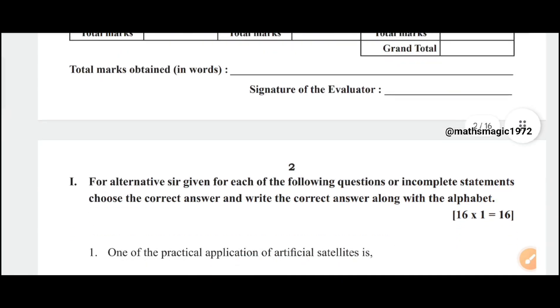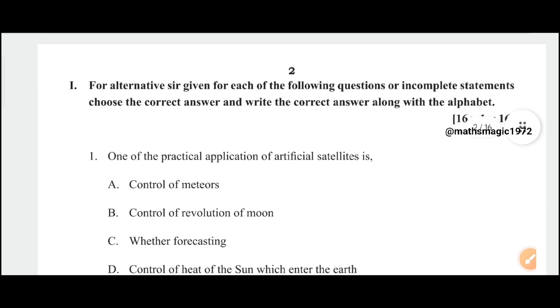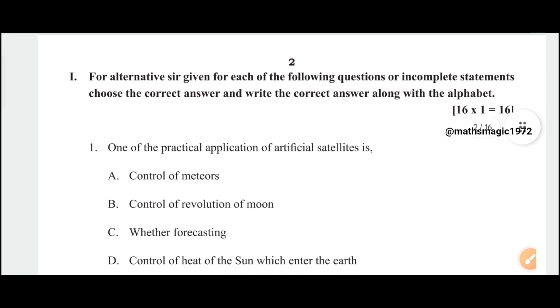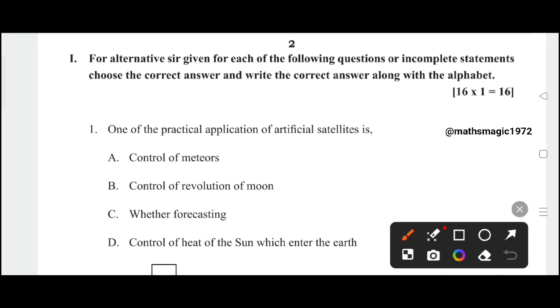Question 1: One of the practical applications of artificial satellites is: A) control of meteorites, B) control of revolution of moon, C) weather forecasting, D) control of heat of the sun which enters the earth. The correct answer is C, weather forecasting.